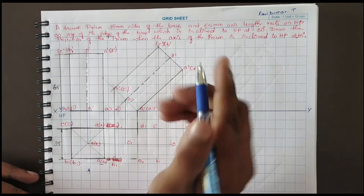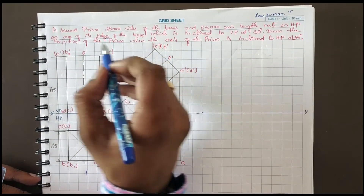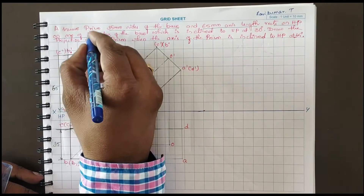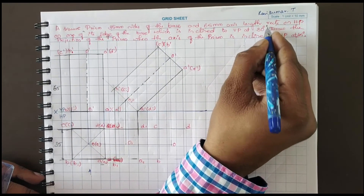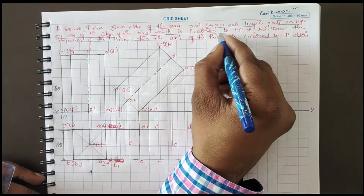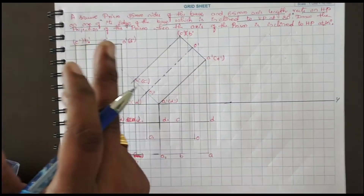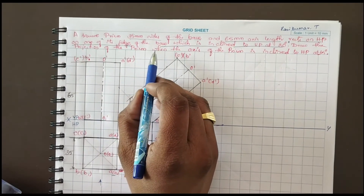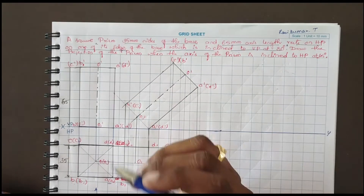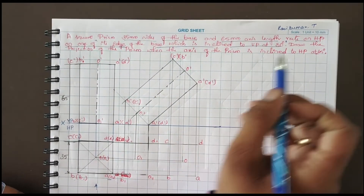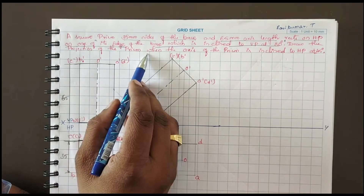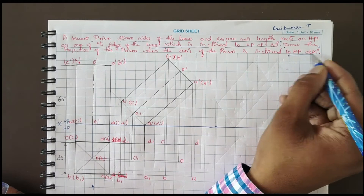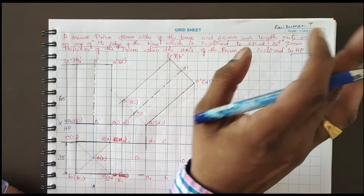We will see the second position. Here they have given: one of its edges of the base which is inclined to VP at 30 degrees — this is one very important sentence. Previously what they gave was the axis of the prism inclined to VP at 30 degrees, but here instead of axis they have given an edge — the resting edge. You have to incline the resting edge to VP 30 degrees. Also, draw the projection of the prism when the axis is inclined to HP at 45 degrees. This is a without-locus problem, please be careful.